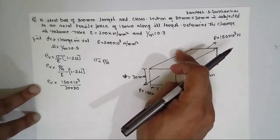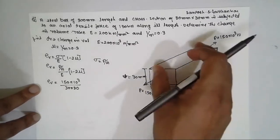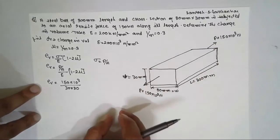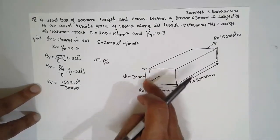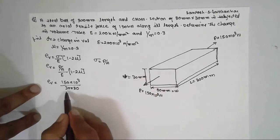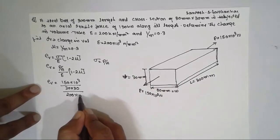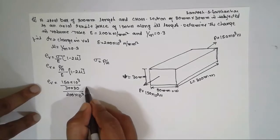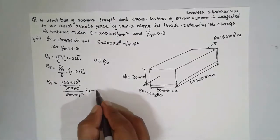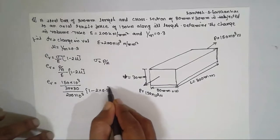If the tension is acting in the length direction, you consider only that cross-sectional area — 30 × 30. The area divided by Young's modulus is 200 × 10³, and (1 − 2μ) = (1 − 2 × 0.3).